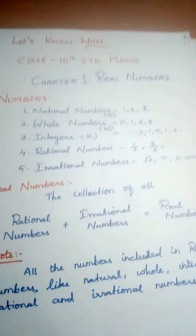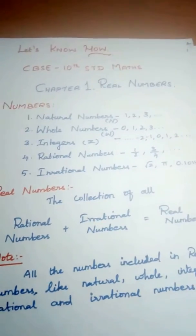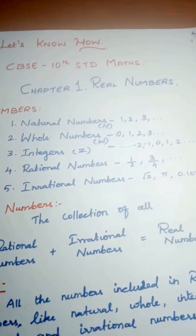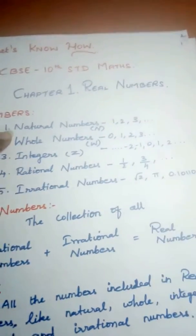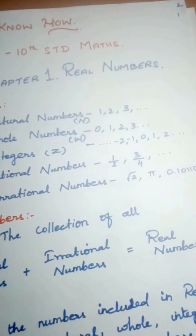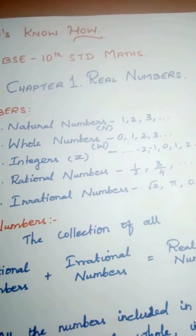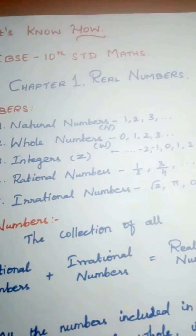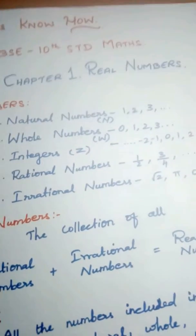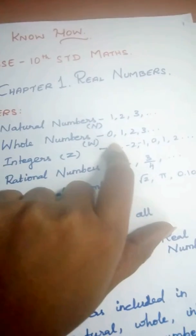Let's recall what numbers we already studied in 9th standard maths: natural numbers, whole numbers, integers, rational and irrational numbers. Natural numbers are how we naturally count — 1, 2, 3, and so on, starting from 1 up to infinity. Whole numbers — the word 'whole' suggests it includes zero. Adding 0 to the natural numbers gives us whole numbers: 0, 1, 2, 3...